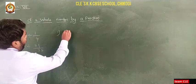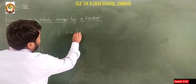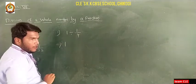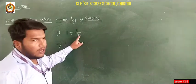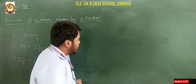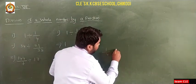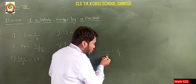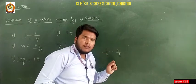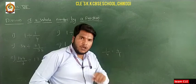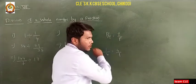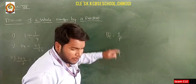So the first problem is 1 divided by 1/4. Whenever you take the reciprocal, you have to change the numerator to denominator and denominator to numerator. For example, if it is 1/4, its reciprocal is 4/1. Here numerator is 1 and denominator is 4; interchanging gives 4/1. So this is called the reciprocal of a fraction — you reverse the number. If it is p/q you write it as q/p.